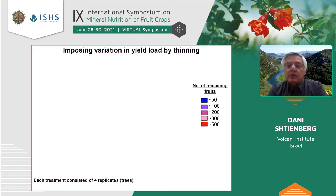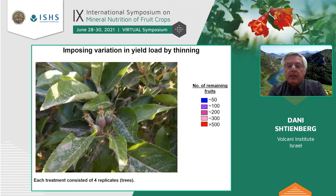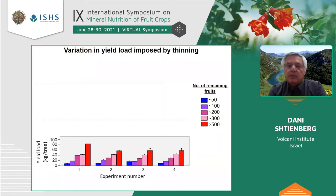We then decided to impose yield variation experimentally by thinning. We used five different thinning treatments, ranging from very few fruits remaining on the trees — about 50 fruits per tree — up to 500 and more fruits per tree. The thinning was carried out soon after fruit set. We did four experiments and succeeded in producing large variation in yield by the end of the season between the first and fifth treatments.